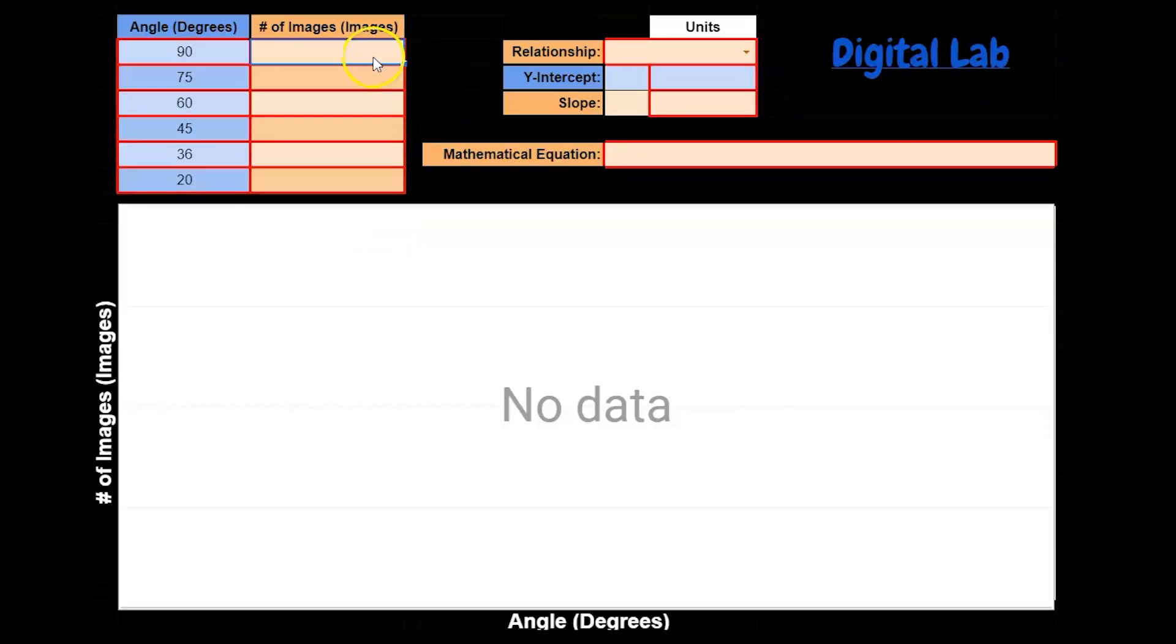As you change the angles and measure the number of images, report your data in this Google Form and in the Google Sheets report as well. As you fill in this table,